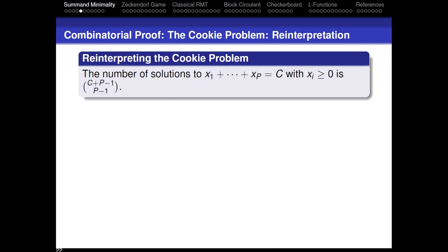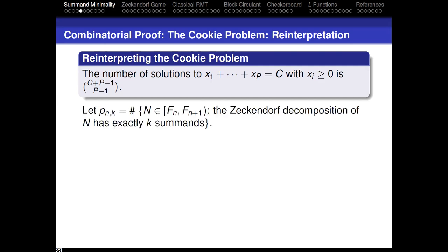If you want to write a math paper, you really should not be talking about Cookie Monster and aiming for a high journal. So we rephrase it: we're counting the number of solutions of x₁ plus ... plus xₚ equals c, where the xᵢ are greater than or equal to zero. We're solving a Diophantine equation. Now when you write this, mathematicians will read your paper. So how can we use this to solve the Zeckendorf problem?